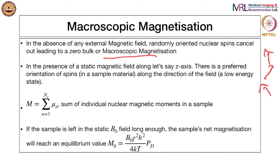But in the presence of a static magnetic field, let us say along the z-axis — we can always assume that the direction of that magnetic field is the z-axis. The magnetization vector and the magnetic field are both vectors. When there is a static applied magnetic field, there is a preferred orientation of spins along the direction of the applied field, and this leads to a net magnetization, which we can write as the vector sum of individual nuclear magnetic moments in a sample.